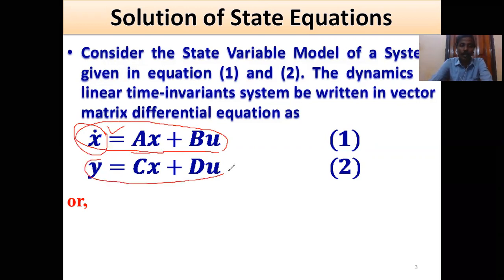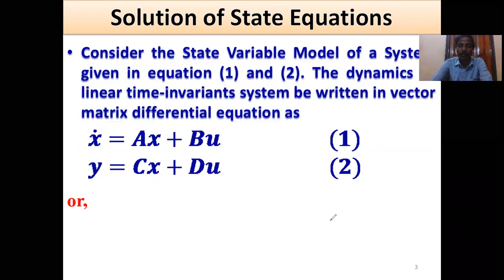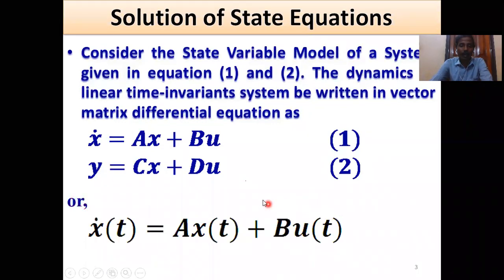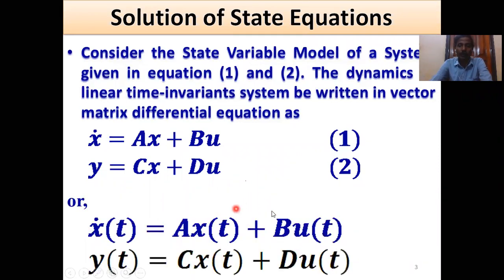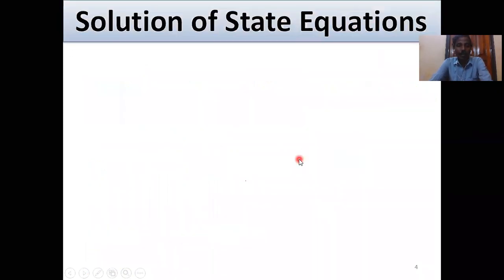The output equation is Y equals Cx plus Du. Another form: Ẋ(t) = Ax(t) + Bu(t) and Y(t) = Cx(t) + Du(t). This is the vector matrix differential equation form.